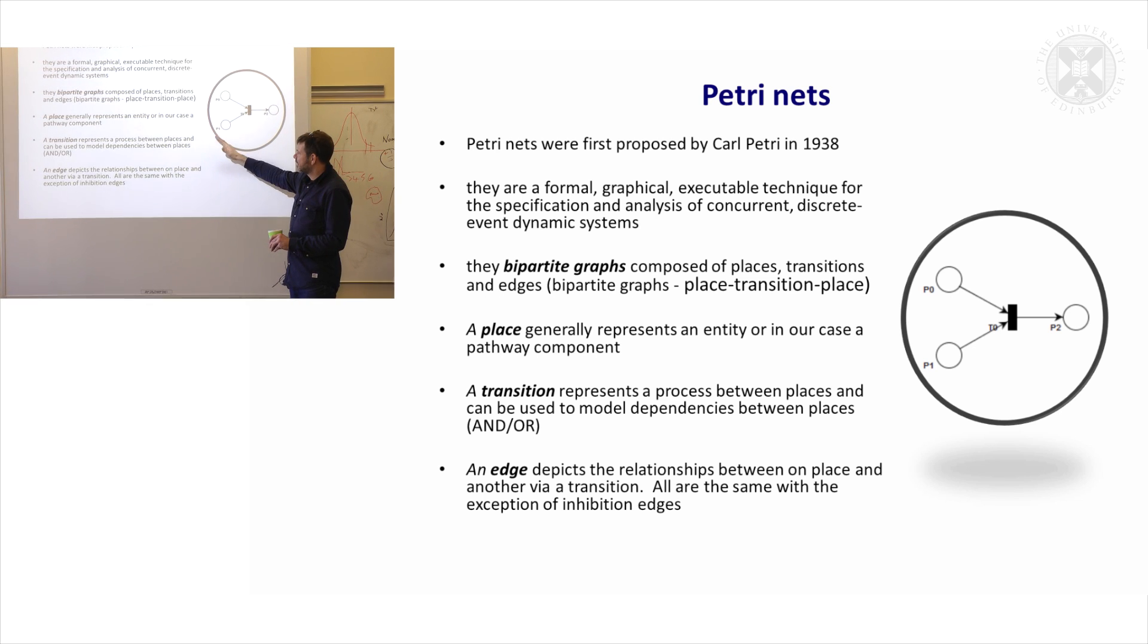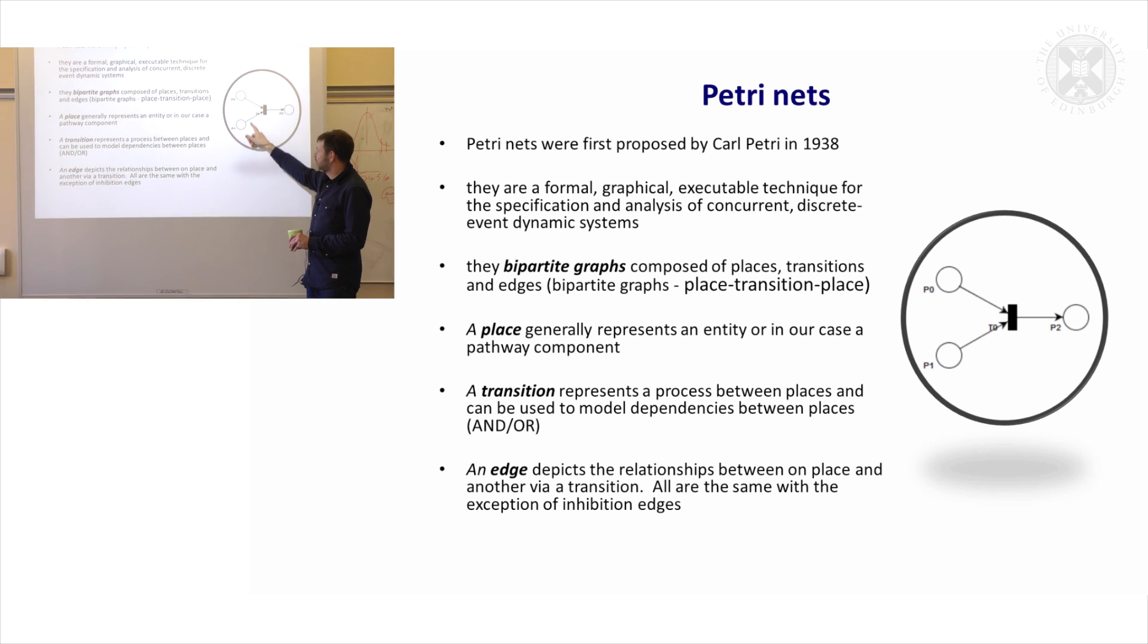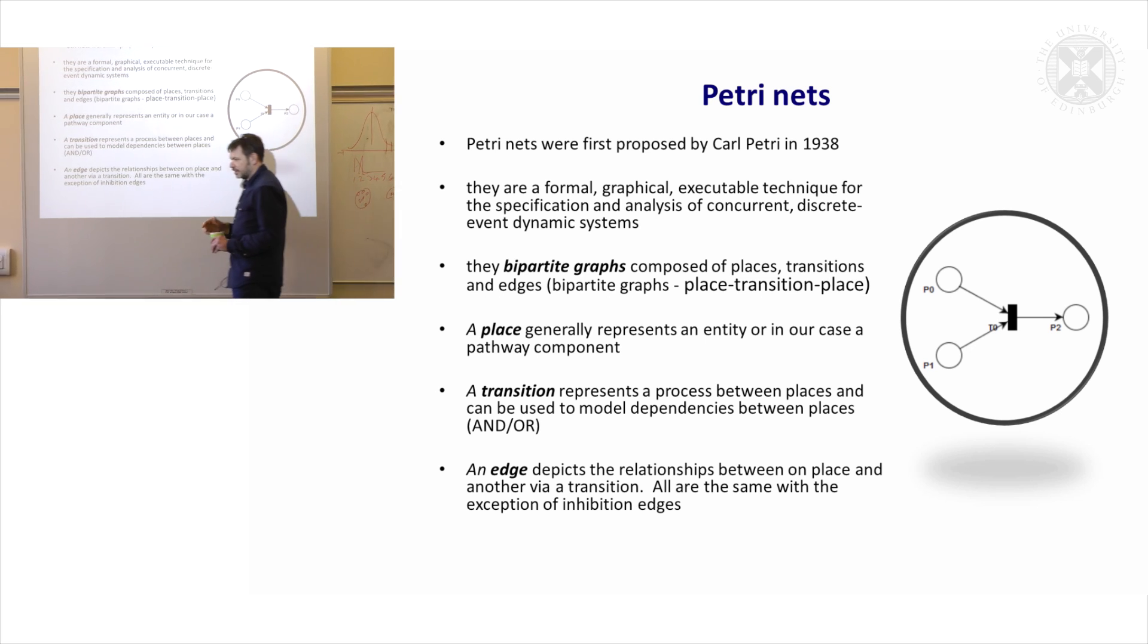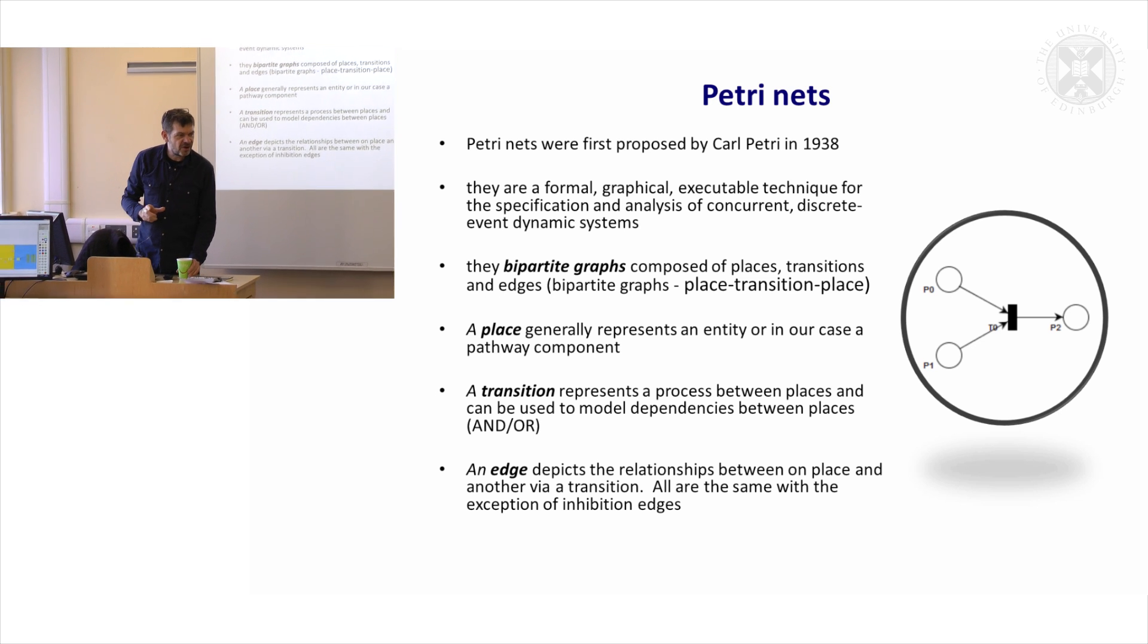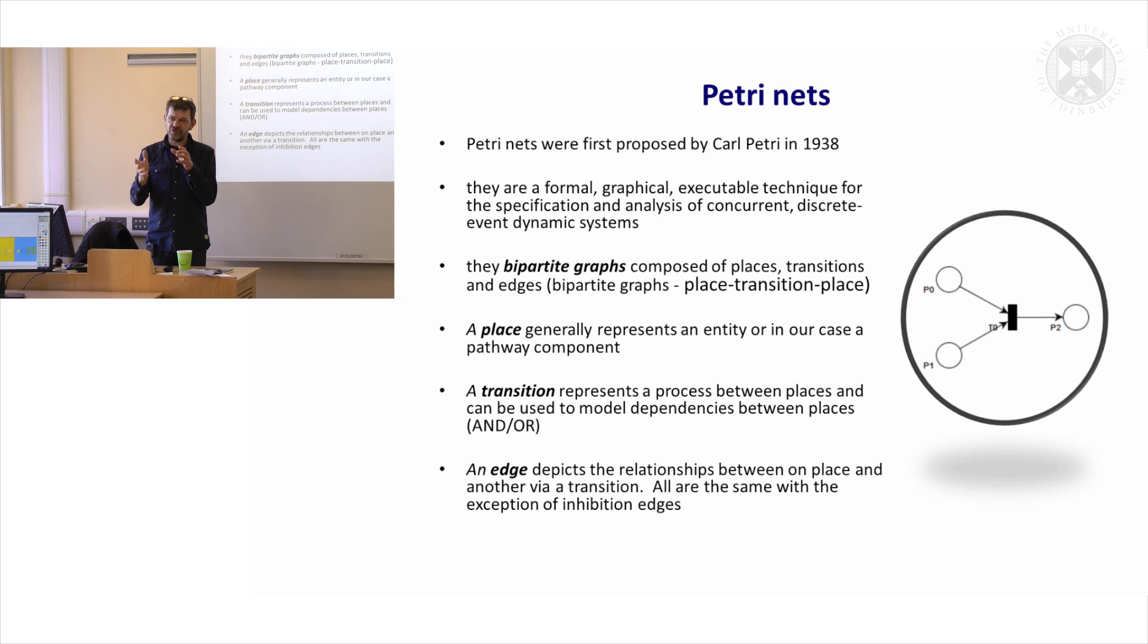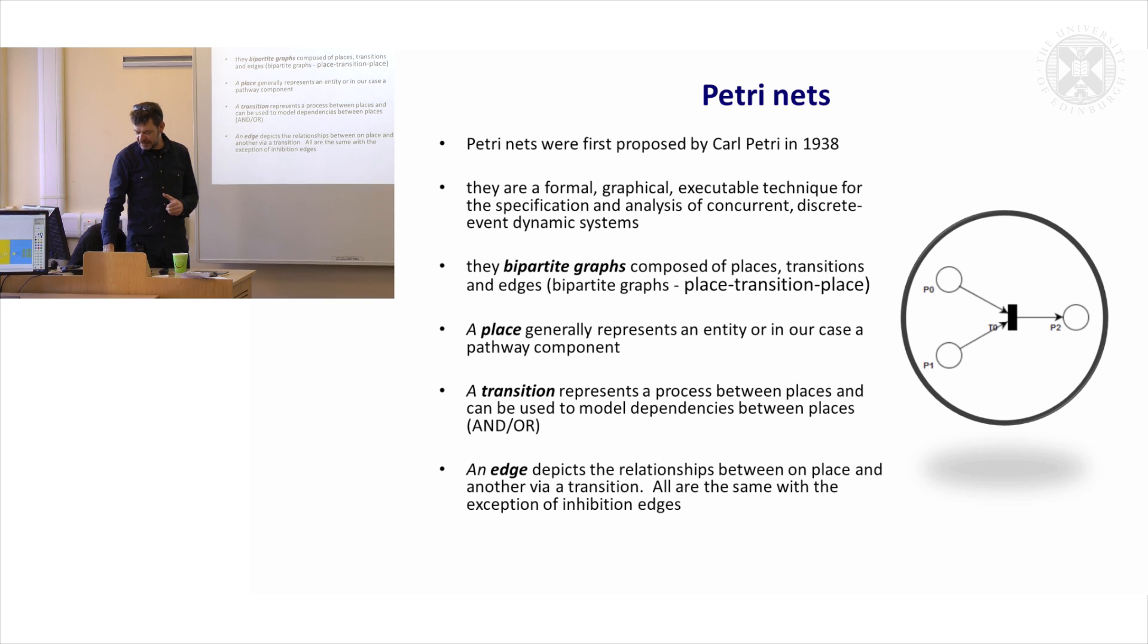Generally a place represents an entity and transitions in terms of process and the edges are the interactions between these things as drawn. What was quite apparent is that what we were almost drawing in our diagrams were Petri nets although we had never actually formally stated them as such.